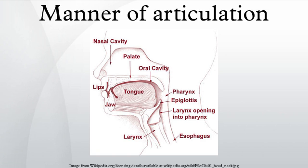Implosives, which are glottalic ingressive: here the glottis moves downward, but the lungs may be used simultaneously, and in some languages no air may actually flow into the mouth. Implosive stops are not uncommon, but implosive affricates and fricatives are rare. Voiceless implosives are also rare.